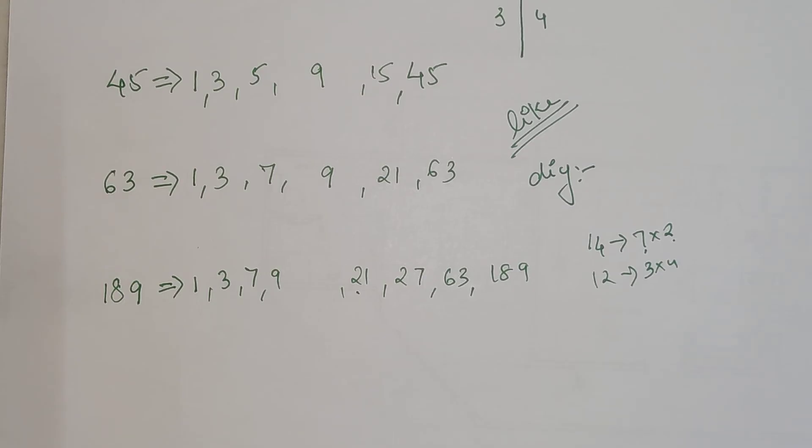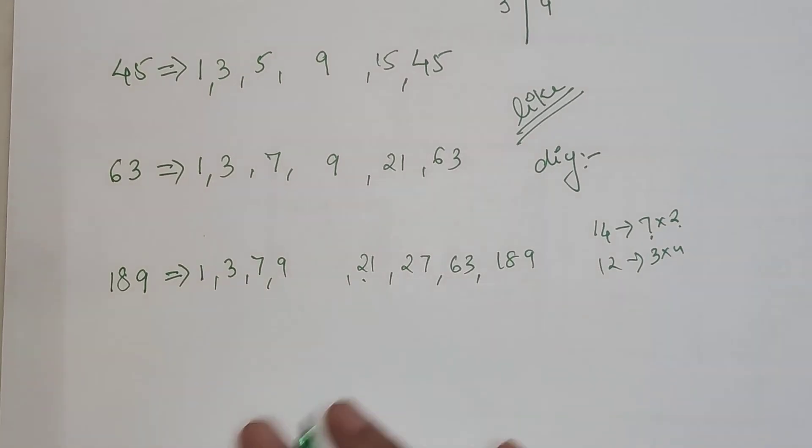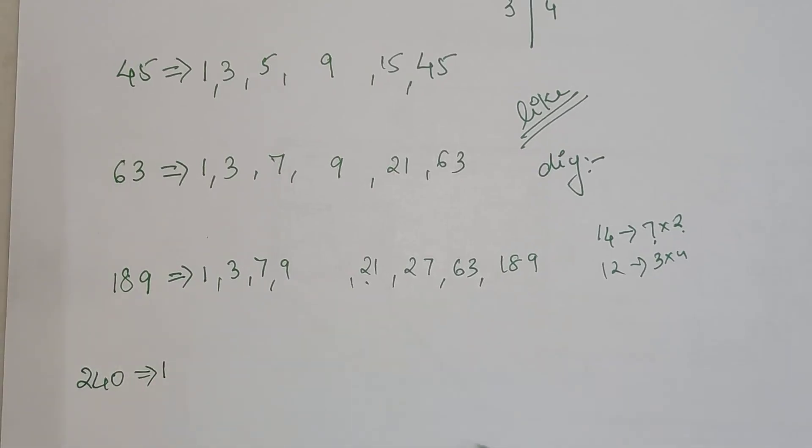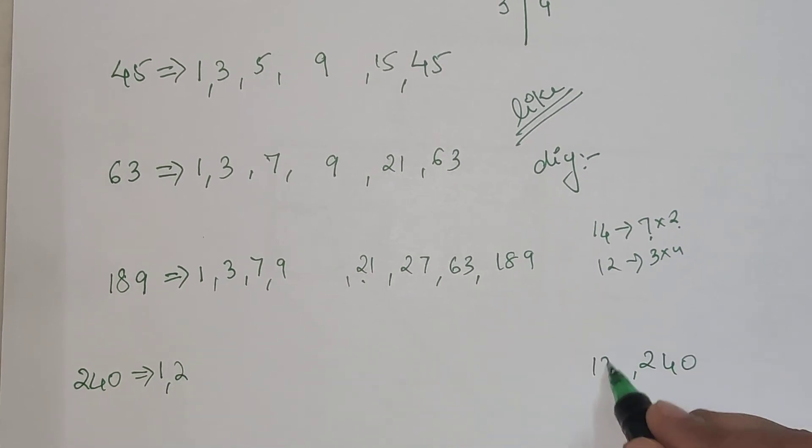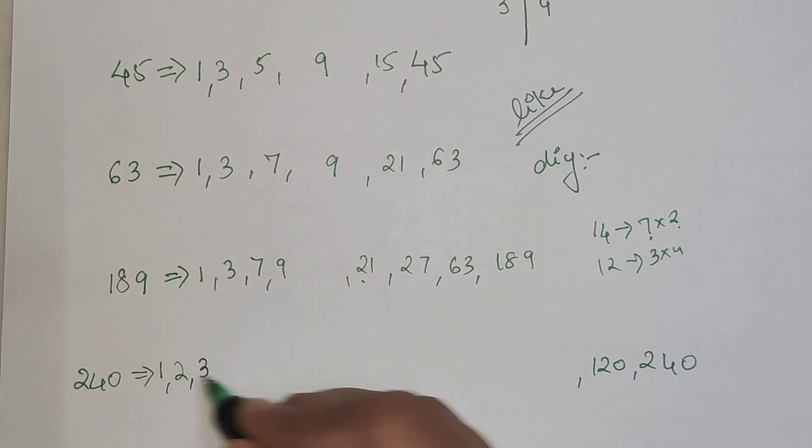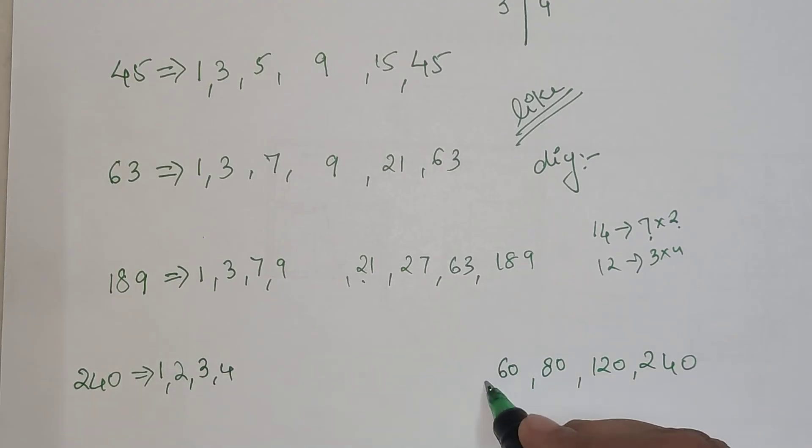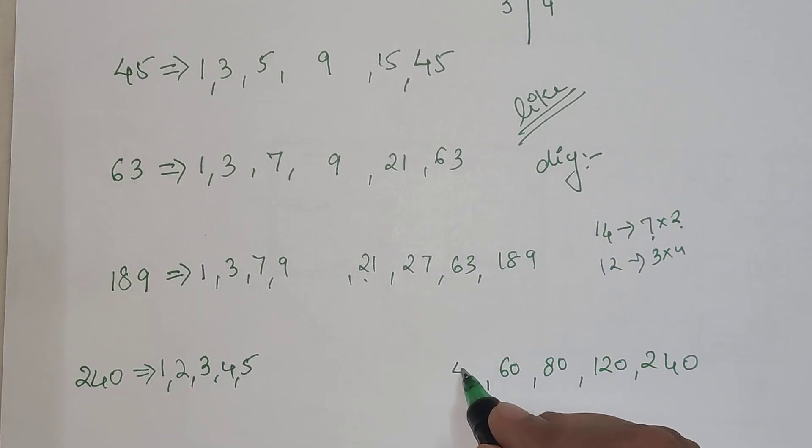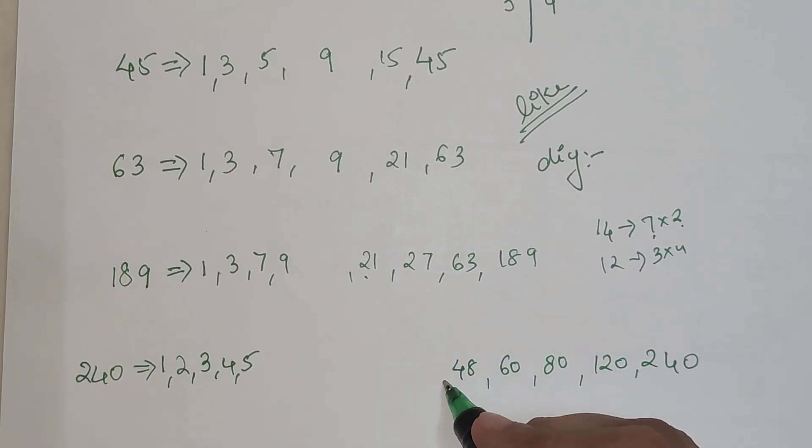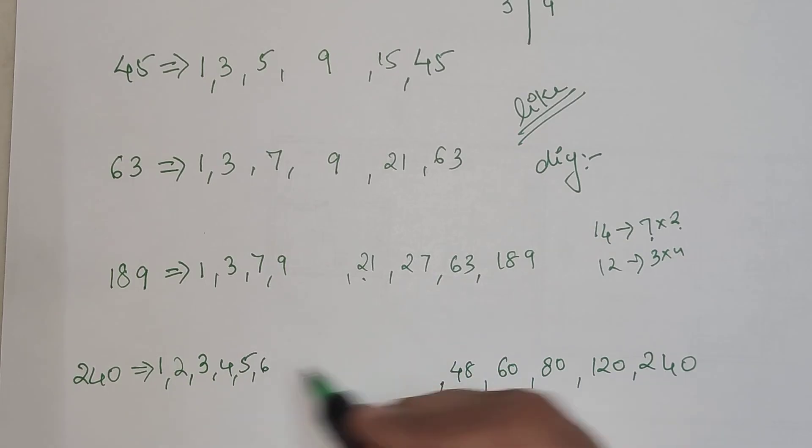I think we have done enough of odd numbers. Let me take a big number 240 which is an even number. So we have 1 and 240. Then we have 2 and 120. Then we have 3 and 80. Then we have 4 which gets you 60. Then we have 5 which is 48. Then we have 6 which gets you 40.